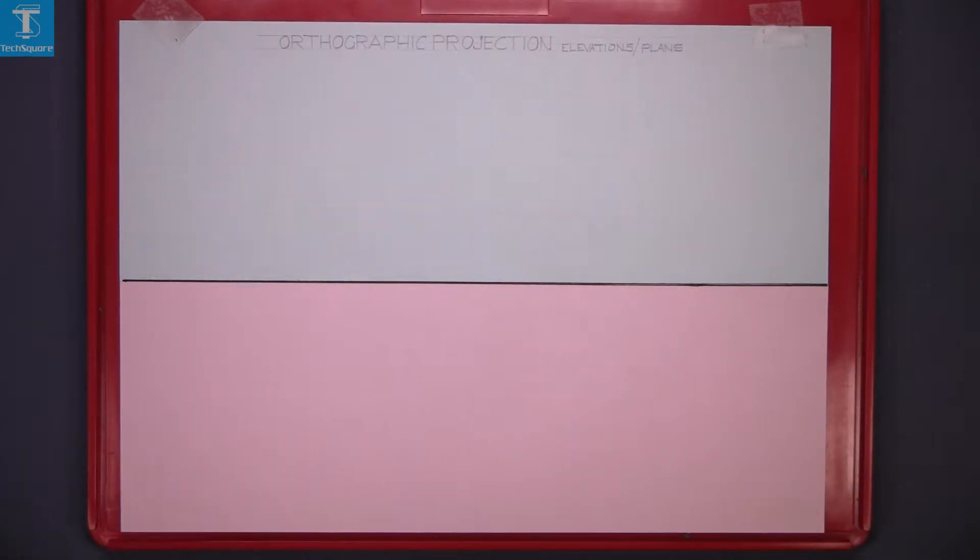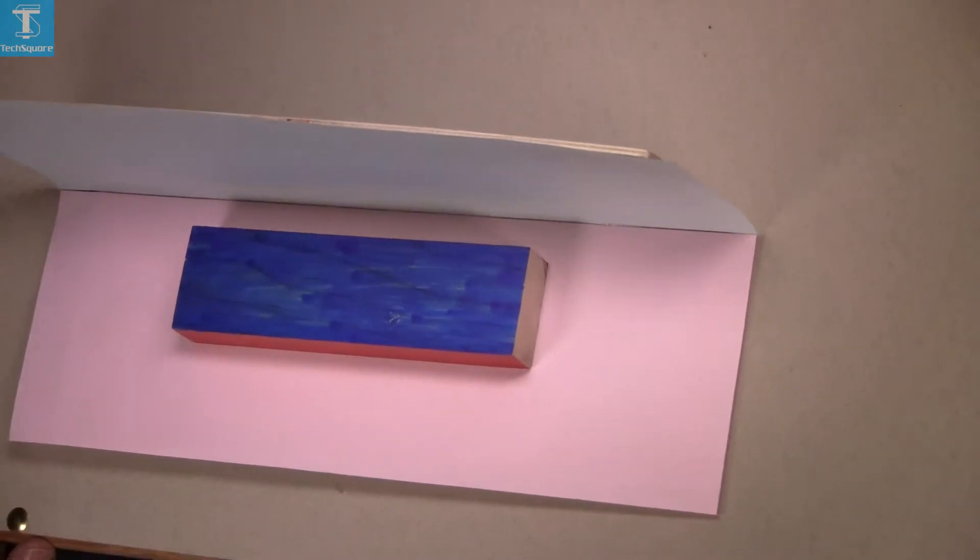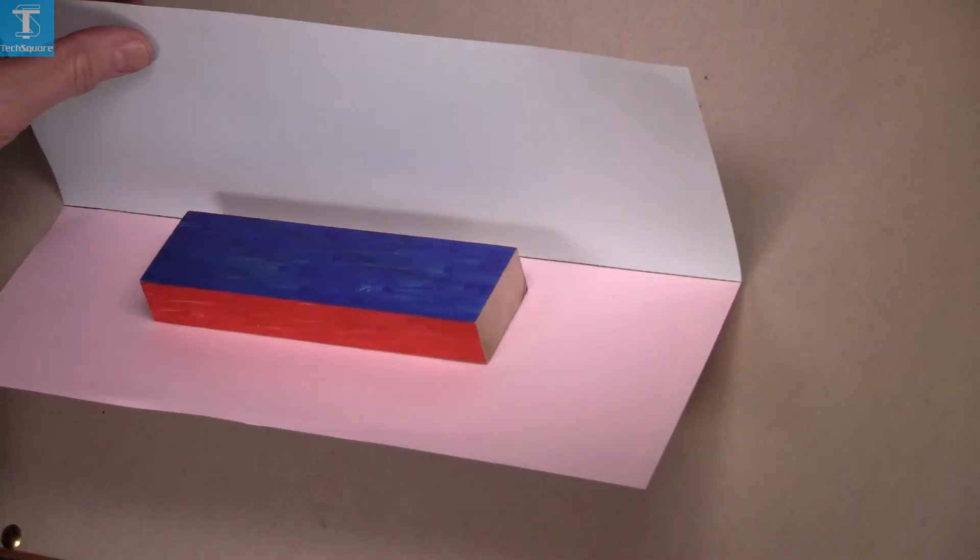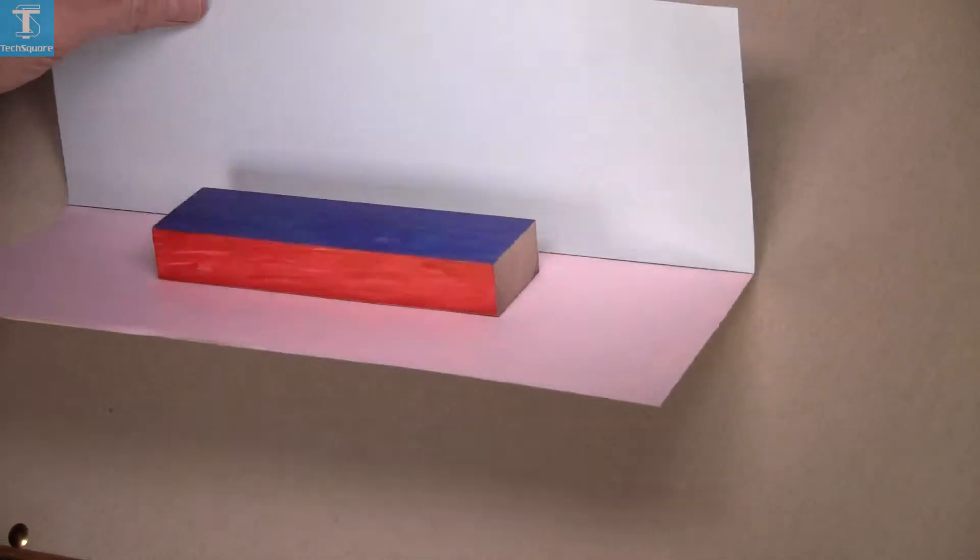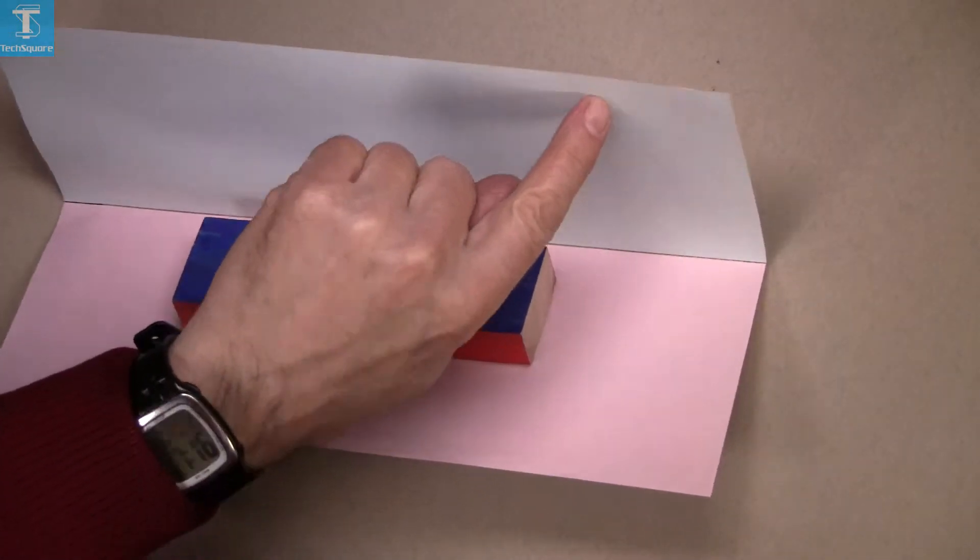To explain this orthographic projection, I'm showing you the way the planes look: the vertical plane and horizontal plane. They're at 90 degrees to each other. The pink plane is the horizontal plane and the blue plane is the vertical plane.